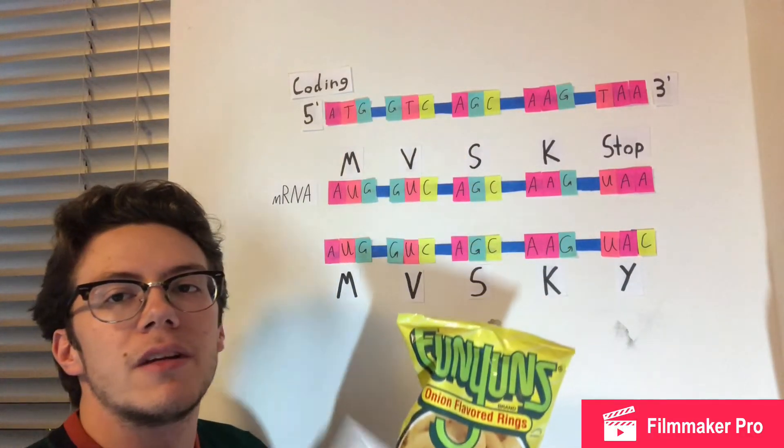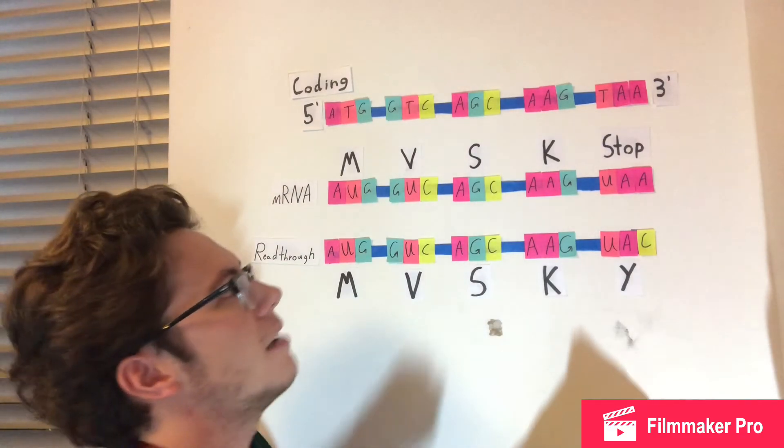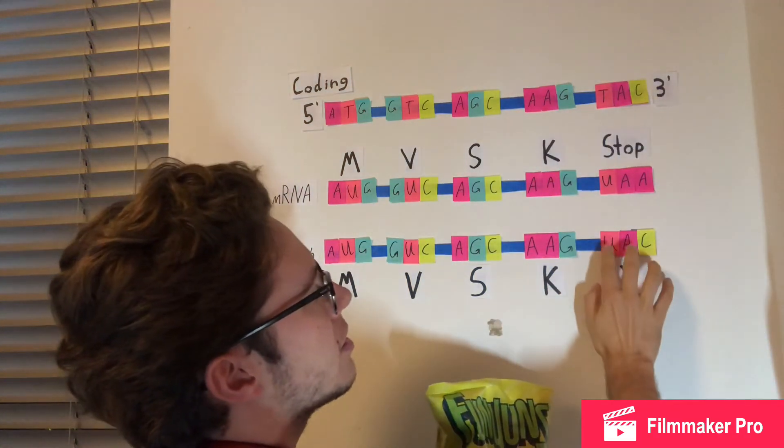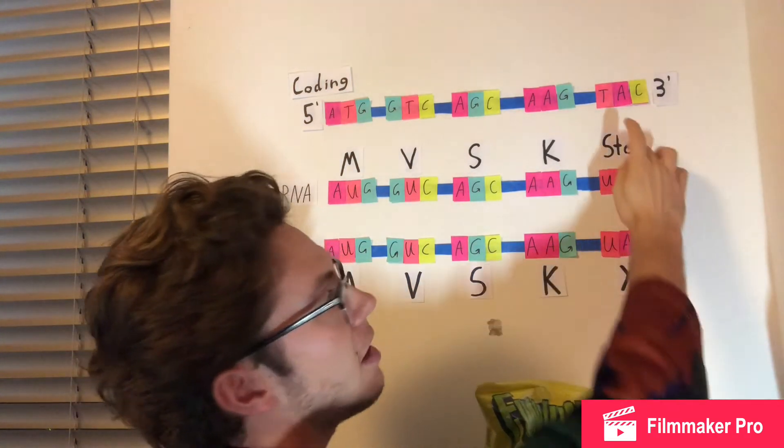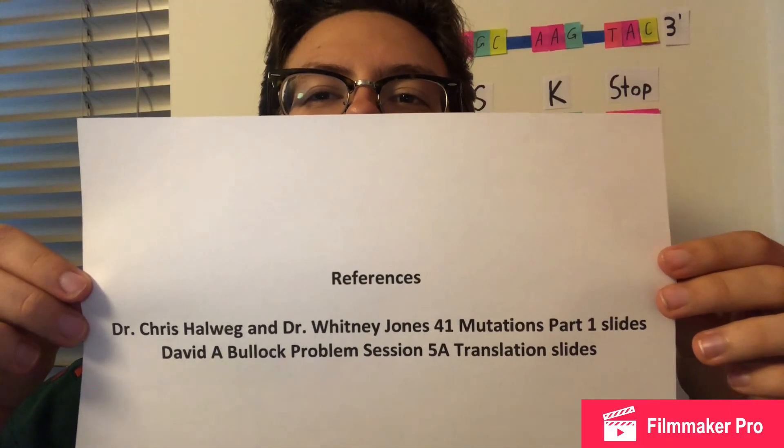If you wanted to end up with Funions, you would need to go through a read-through mutation. And we can accomplish that by having the adenine go through a transversion mutation into a cytosine. You'll then change this into a UAC, which is not a stop codon, causing the transcription to continue happening.